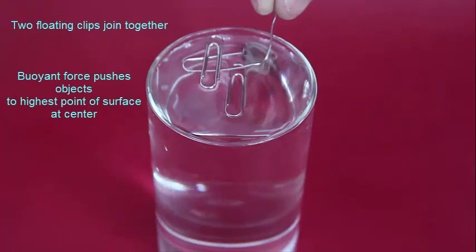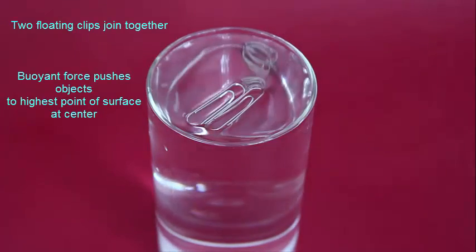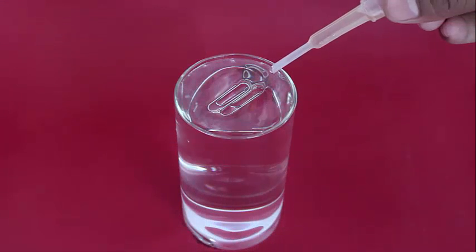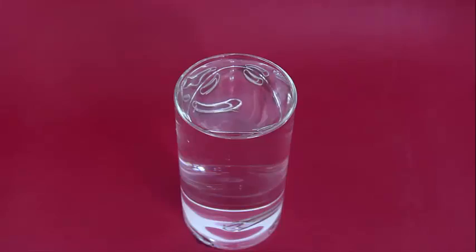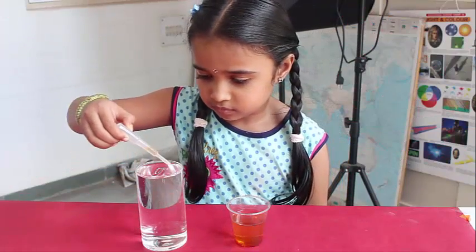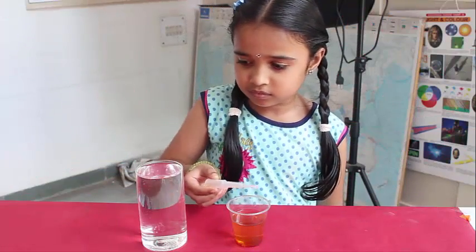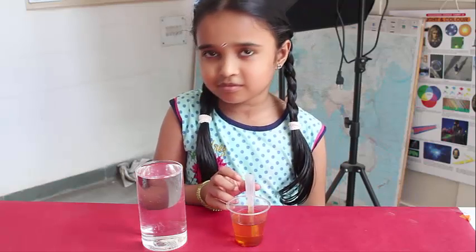Now float two paper clips. The paper clips would have a tendency to float to the higher surface. On placing a drop of soap solution, the skin becomes weak and the paper clips sink to the base of the glass.